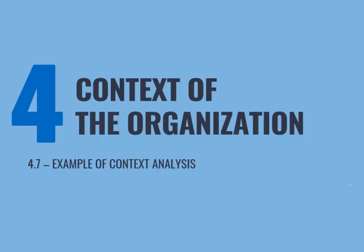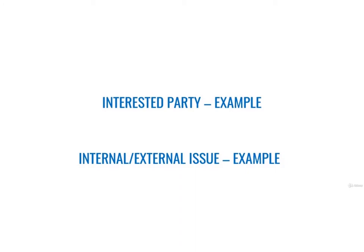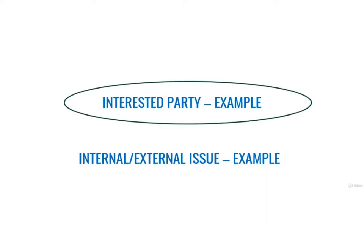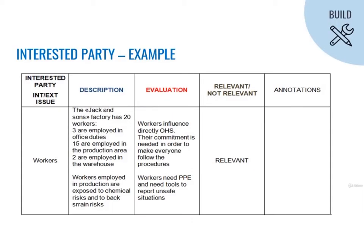Subchapter 4.7: How to Use the Context Analysis Matrix. Now that we made our tool, let's make it work. We could see together one example for an interested party and one for an issue — internal or external, it doesn't really matter. We'll stick with the cheese factory example we already talked about. We can start from an interested party: Workers. We started with this one because it's always the most relevant interested party you could think of. Making a context analysis in which workers are not considered could be judged very negatively during a third-party audit.